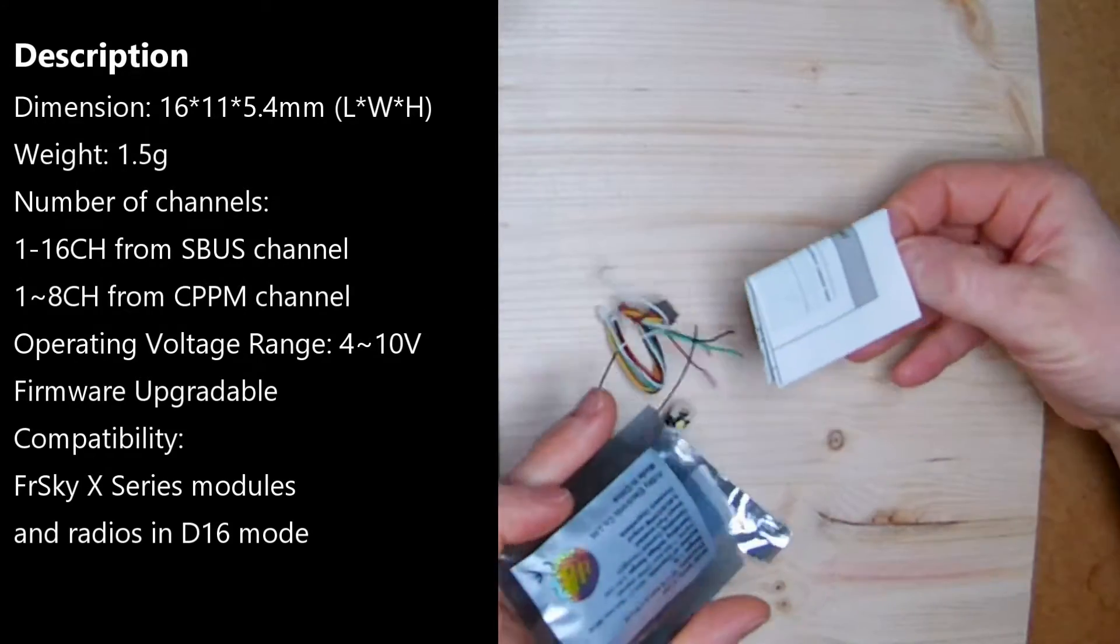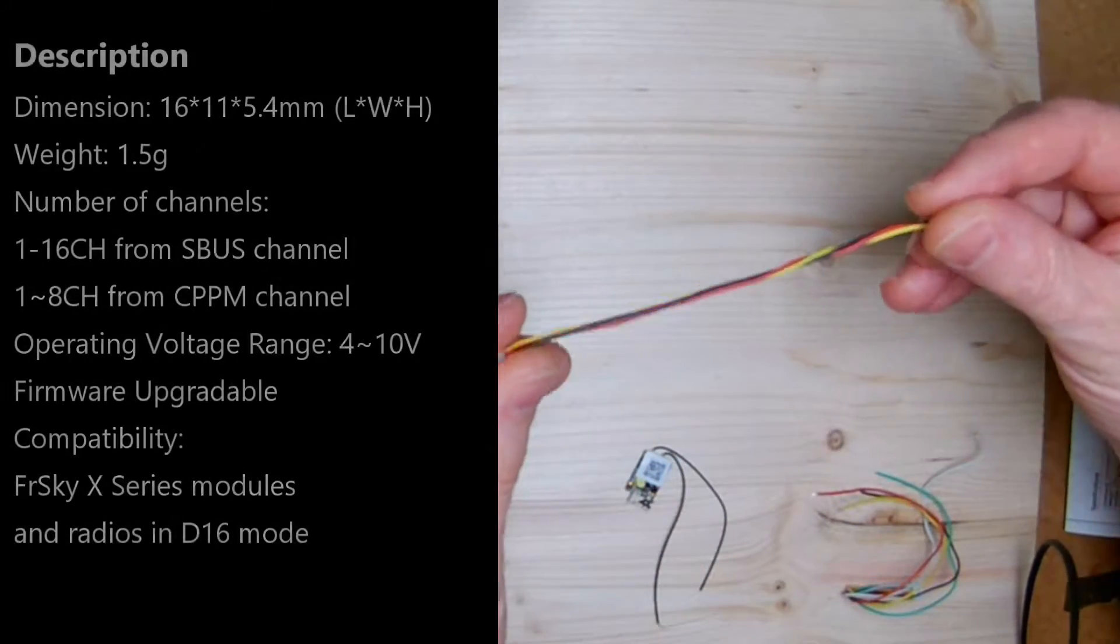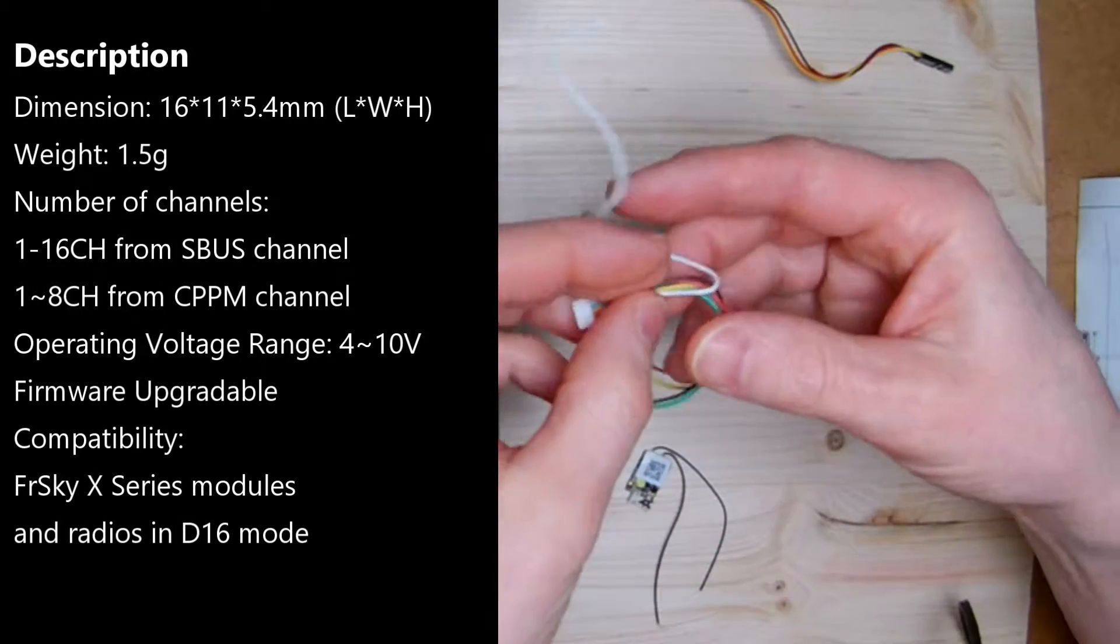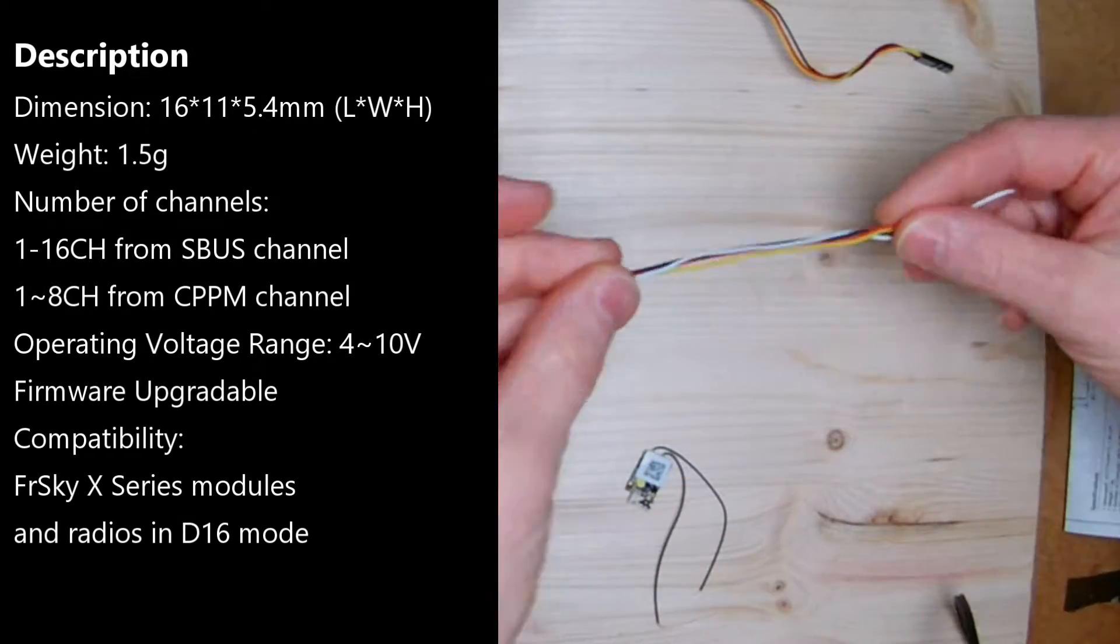The package contains a cable which is required to flash the firmware. There are also cables with a 5-pin connector to connect the RX with the flight controller and the redundancy function.